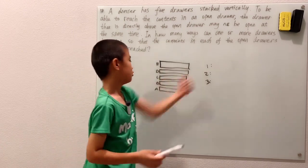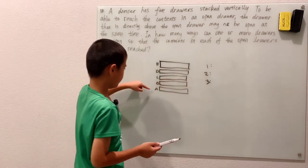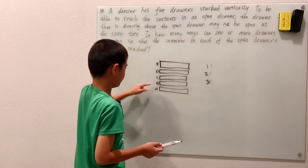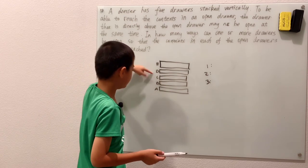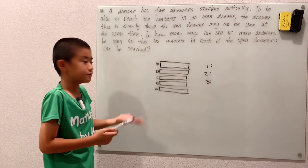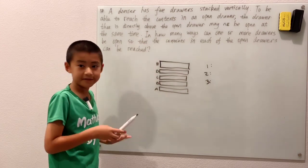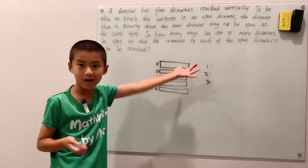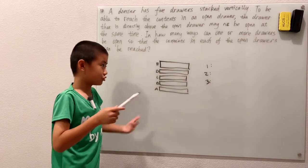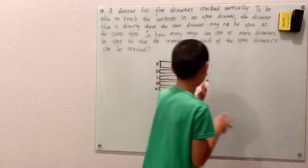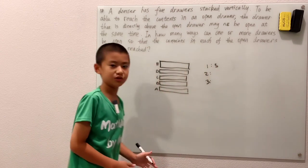One drawer is open. Well, that means A, B, C, D, or E can be open. Any of those drawers can be open. There's no other drawers to affect another drawer because we only have one drawer. The drawer itself can't affect itself. So you have five possibilities for that.